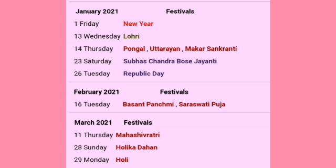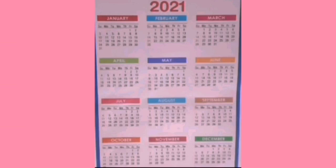There are some festivals in the calendar. Let's see what is the date of Lohri. Lohri is on 13th January. In the calendar, the month of January is given only once. This means Lohri comes once in a year.